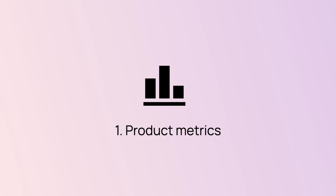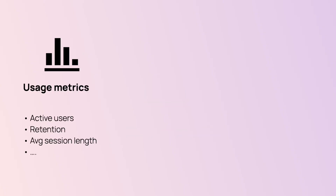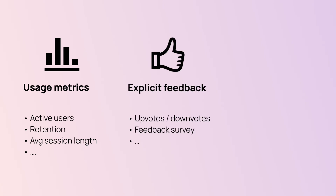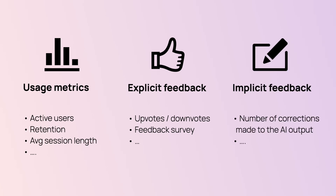So, what exactly can you track? First are product metrics. For example, how often users engage with your LLM feature, or do they come back to use it again? Just be cautious with interpreting this — long chatbot conversations might mean that users are stuck, not that they're impressed. You can also gather explicit user feedback, like upvotes or downloads. And if your app helps write content like emails, you can track things like how many edits users make to the draft.